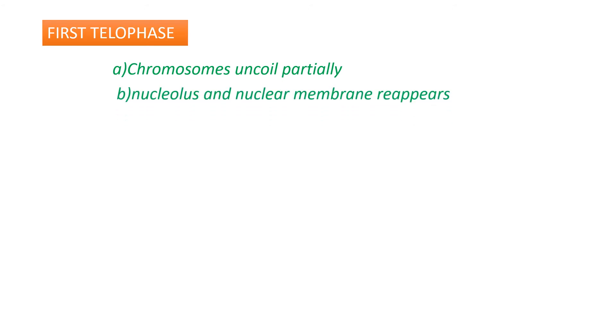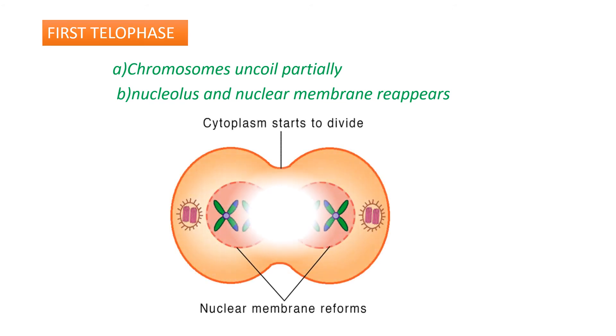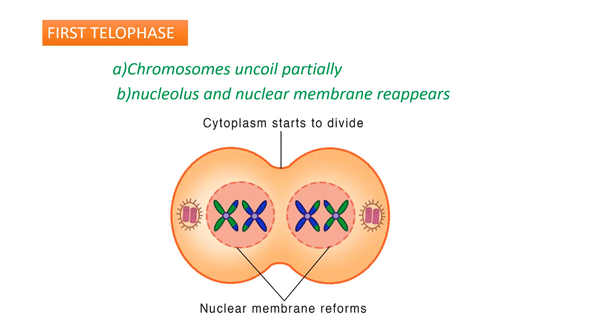Telophase I is the fourth stage of meiosis I. During this stage, there is partial uncoiling of the chromosomes — they do not completely convert into chromatin material; the thick chromosomes become a little thinner. The nucleolus and nuclear membrane reappear during this stage.